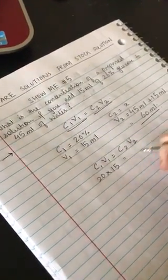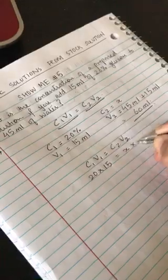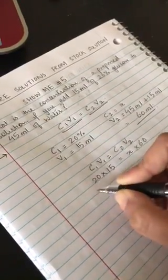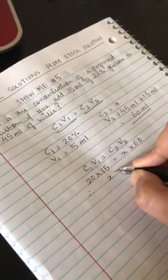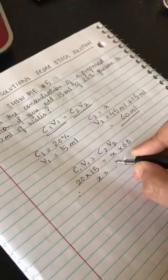Now plugging in the values in this equation you get C1 is 20 into 15 is equal to X into 60.